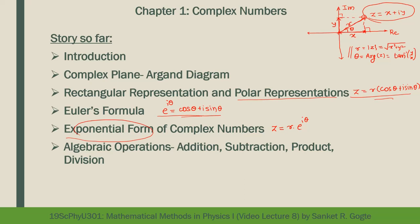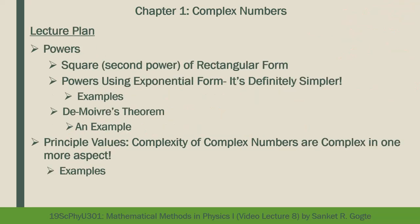In the last lecture we considered basic algebraic operations on complex numbers and their geometric interpretation in the Argand plane. The key takeaway was that you should always change the form of a complex number depending on the operation you want to perform. It is convenient to have the complex number in either rectangular or exponential form. This will be more evident in this lecture.